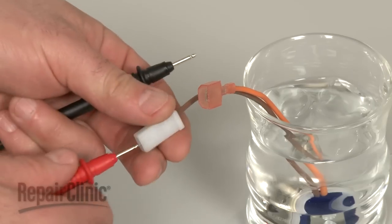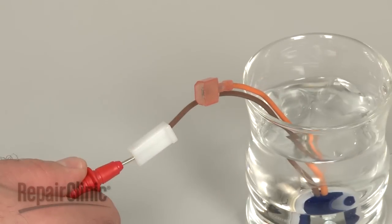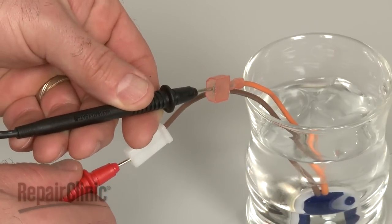Now use a probe to touch one of the thermostat's terminals and the second probe to touch the other terminal.